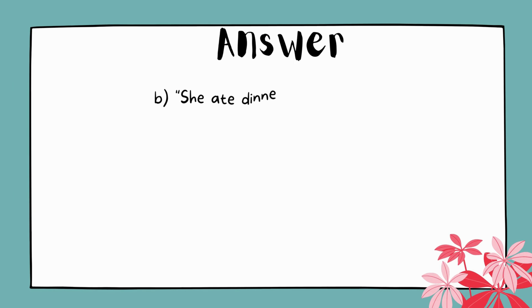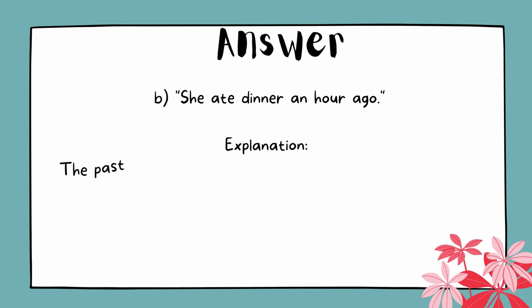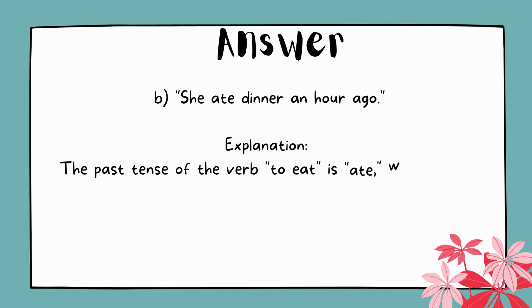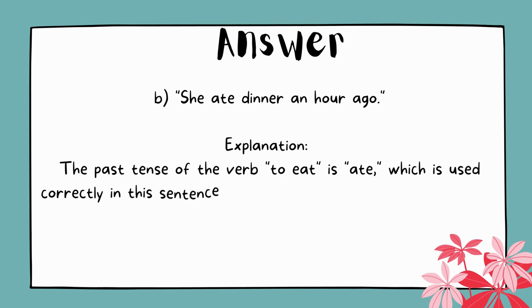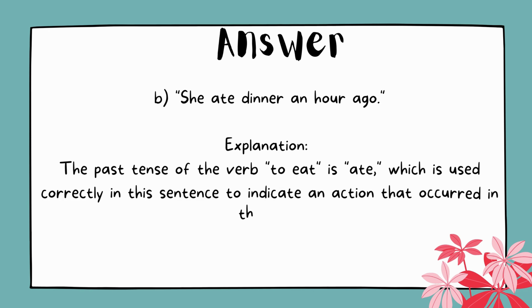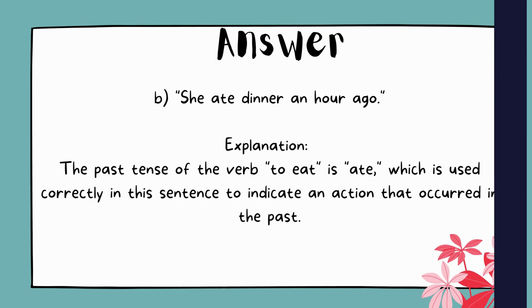The answer is B. She ate dinner an hour ago. Explanation: The past tense of the verb 'to eat' is 'ate,' which is used correctly in this sentence to indicate an action that occurred in the past.